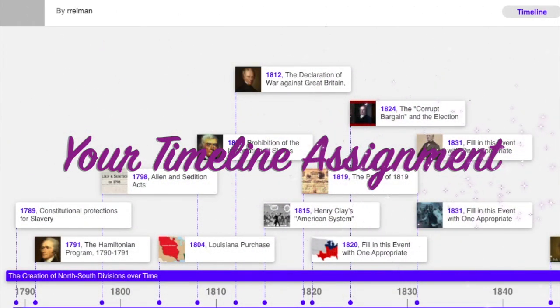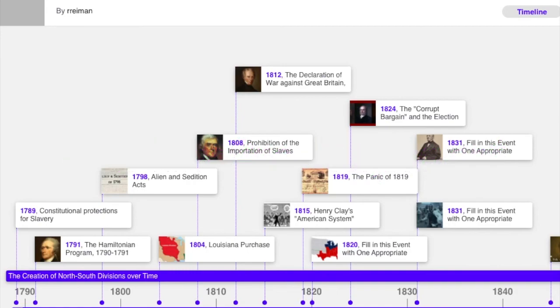This provides an overview of the timeline assignment, 'A Dividing America: 1789–1860, The Sources of Sectionalism Between North and South.' This will show you what you need to do for the assignment. I'm providing you a template to complete this timeline, but first we're going to go through the first part of it, from 1790 to 1840. You will be completing parts of the timeline between 1840 and 1860.